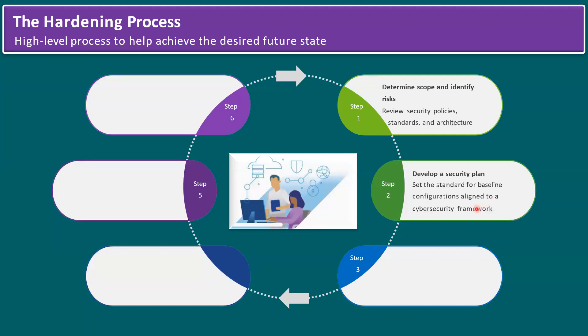Develop a security plan: set the standard for baseline configuration and align to a cybersecurity framework. Step three: implement security controls — implement configuration and security controls and test performance to ensure validity. One example is setting strong password policies and encrypting virtual machine data using either the native VM encryption feature or an external KMS server, and applying security policies.